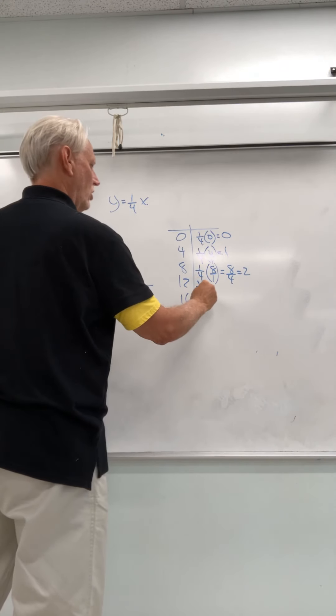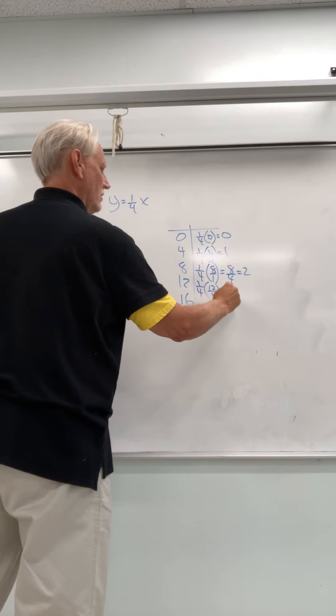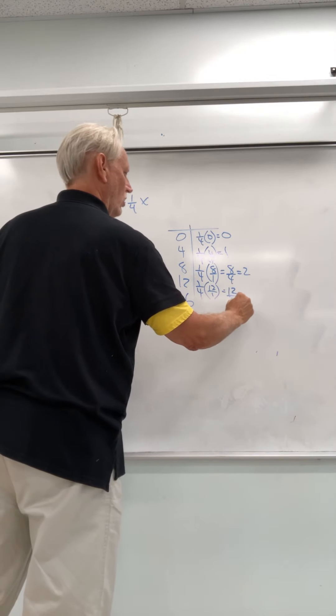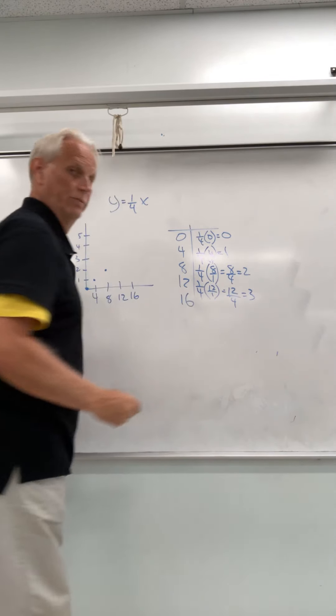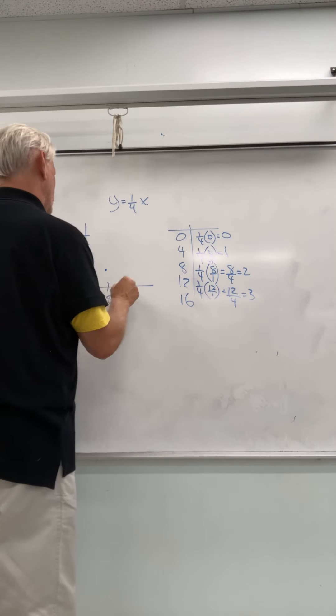Then we're going to do 1 fourth times 12 over 1. That's going to give you 12 over 4. And that's going to be 3. So we go over 12, up 3.